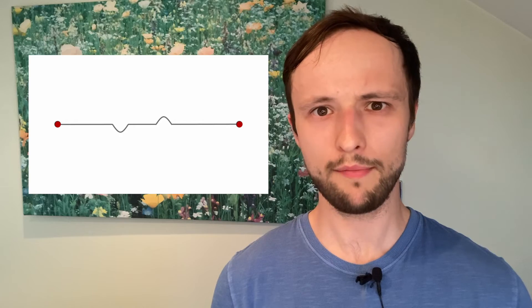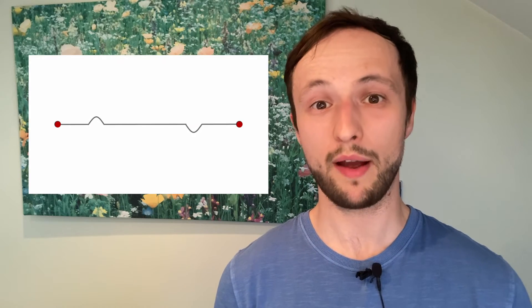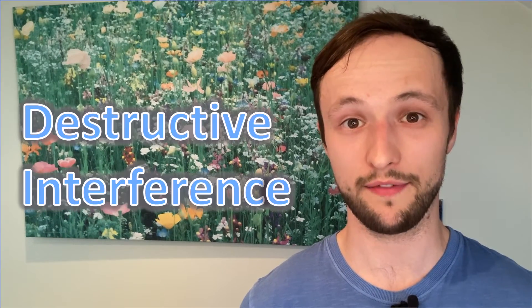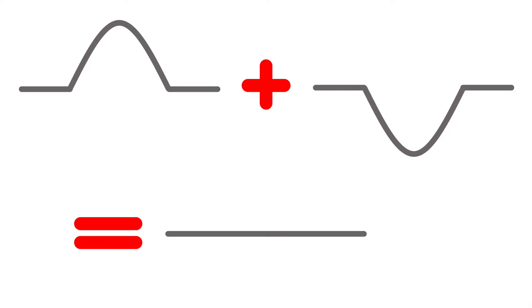Let's send down two disturbances, one after the other has reflected back, and see what happens when they run into each other. There was a moment there when the string was completely flat. The waves kept going on their merry way afterwards, but that moment where they appeared to disappear entirely is what we call destructive interference. In short, the disturbance on the wave is a combination of both those wave shapes, and in this case it was flat.